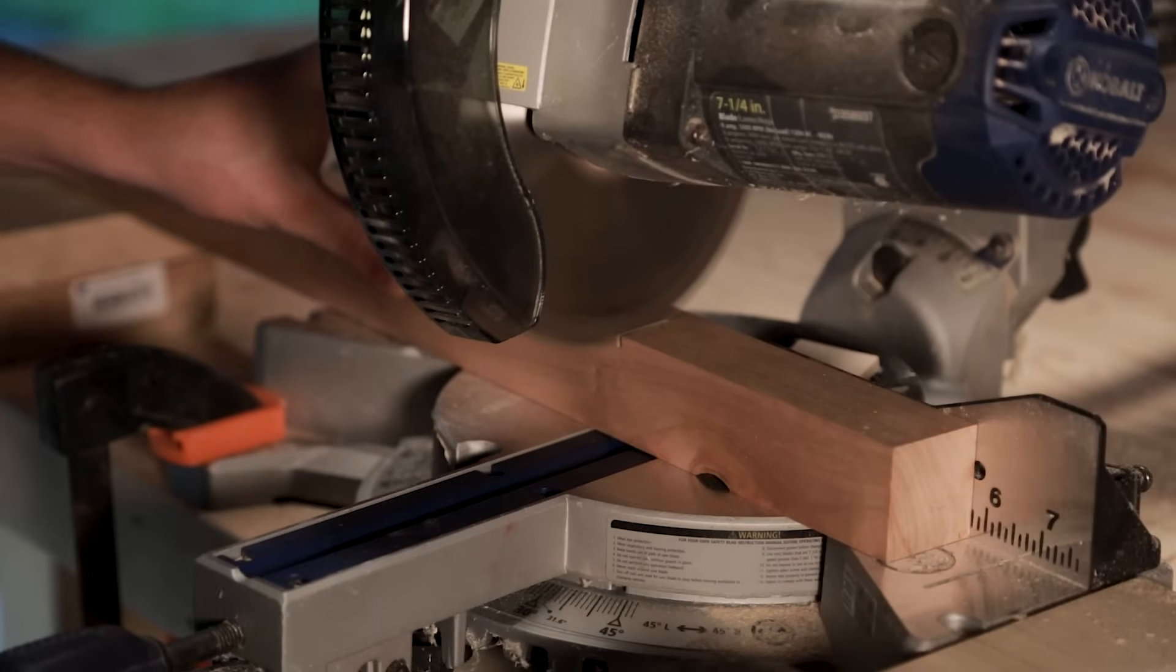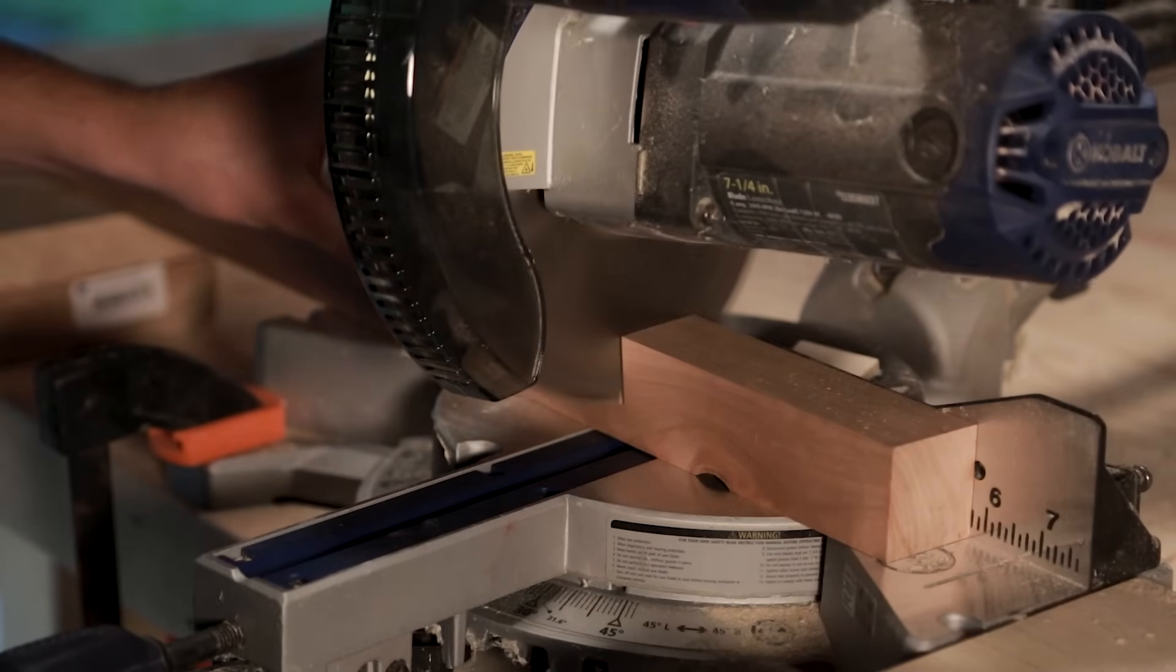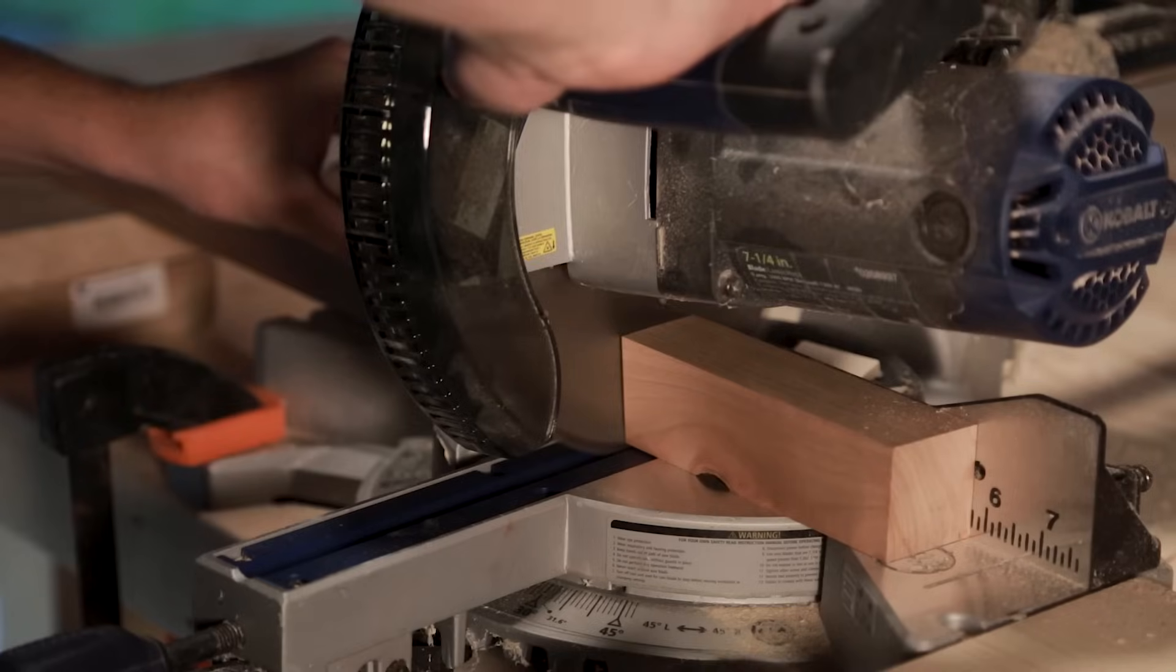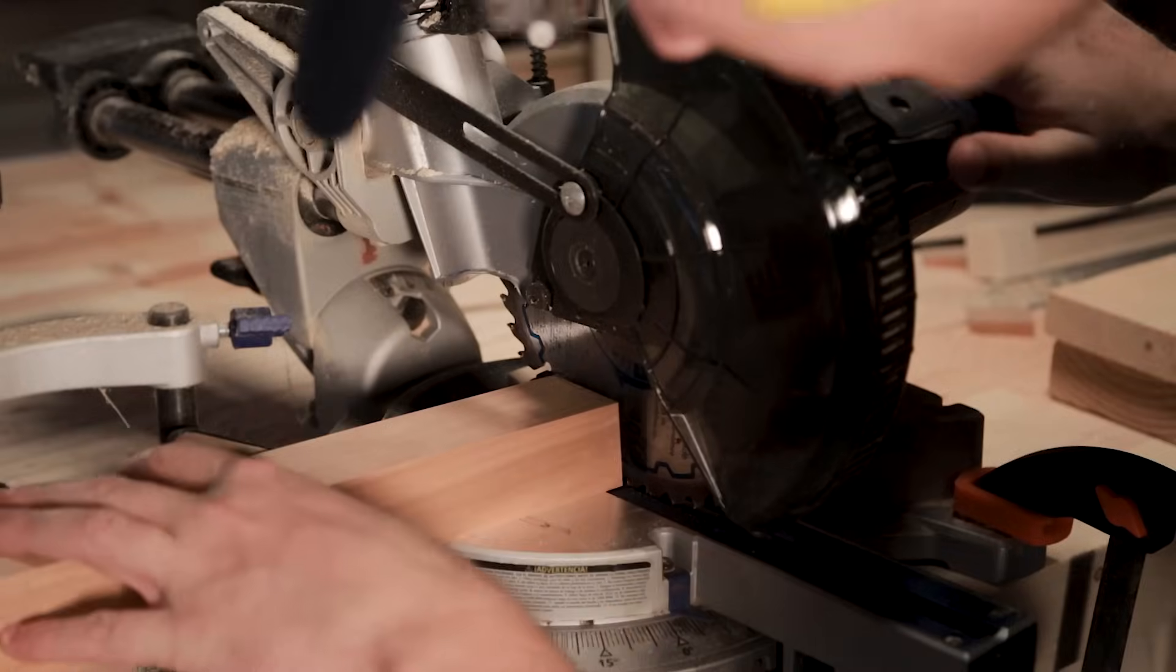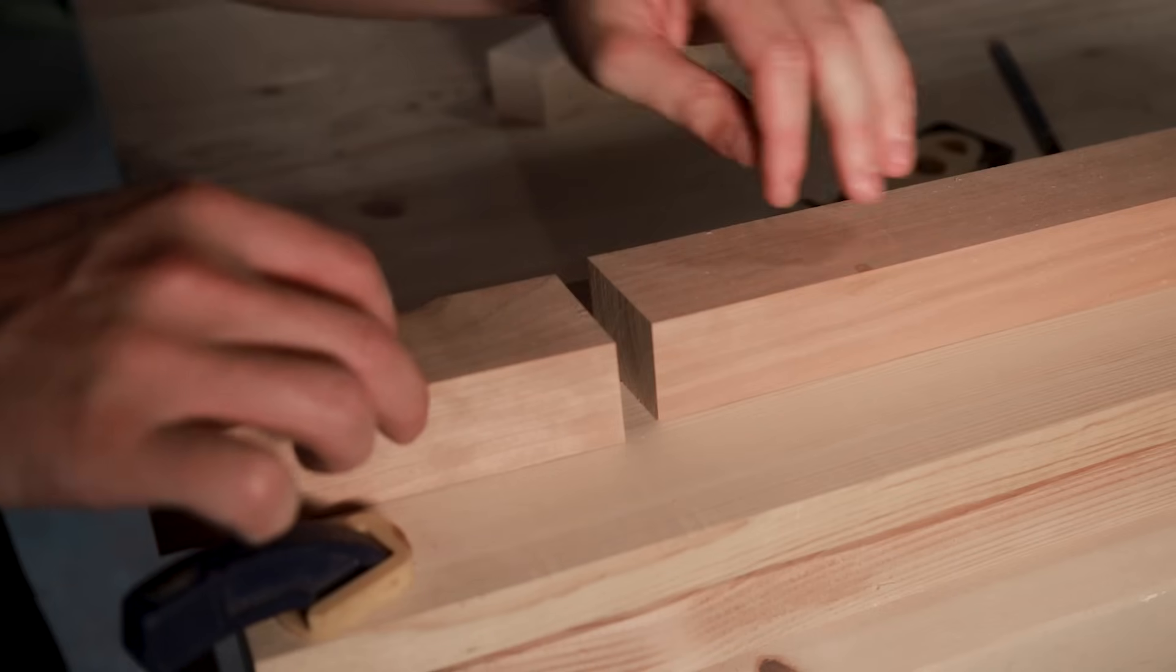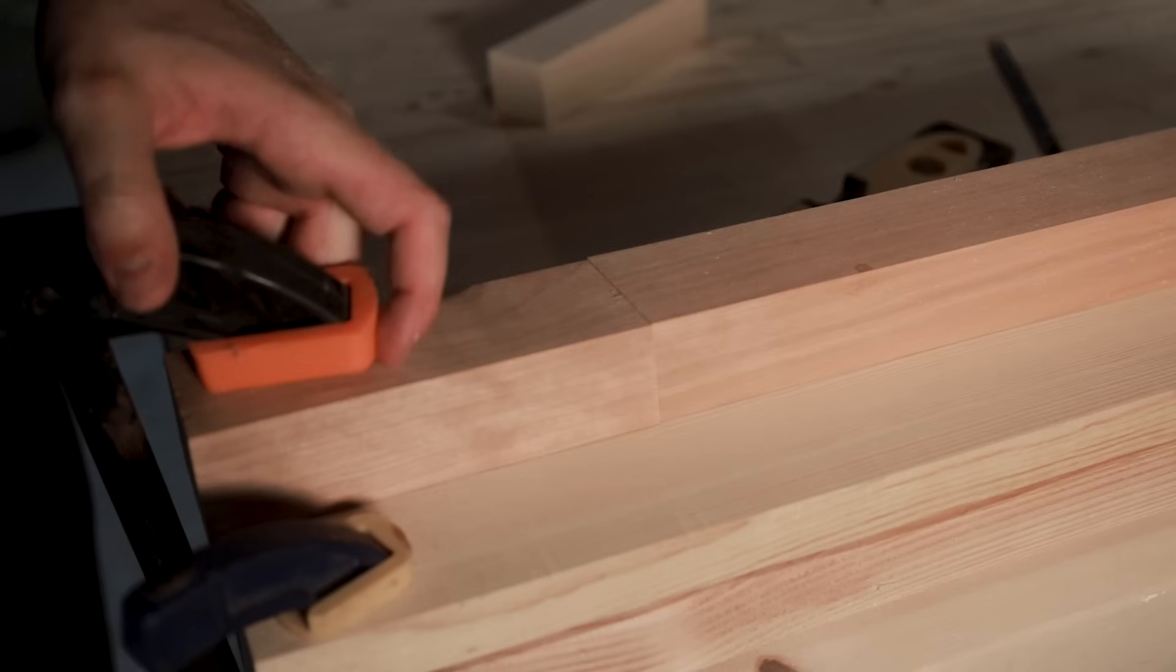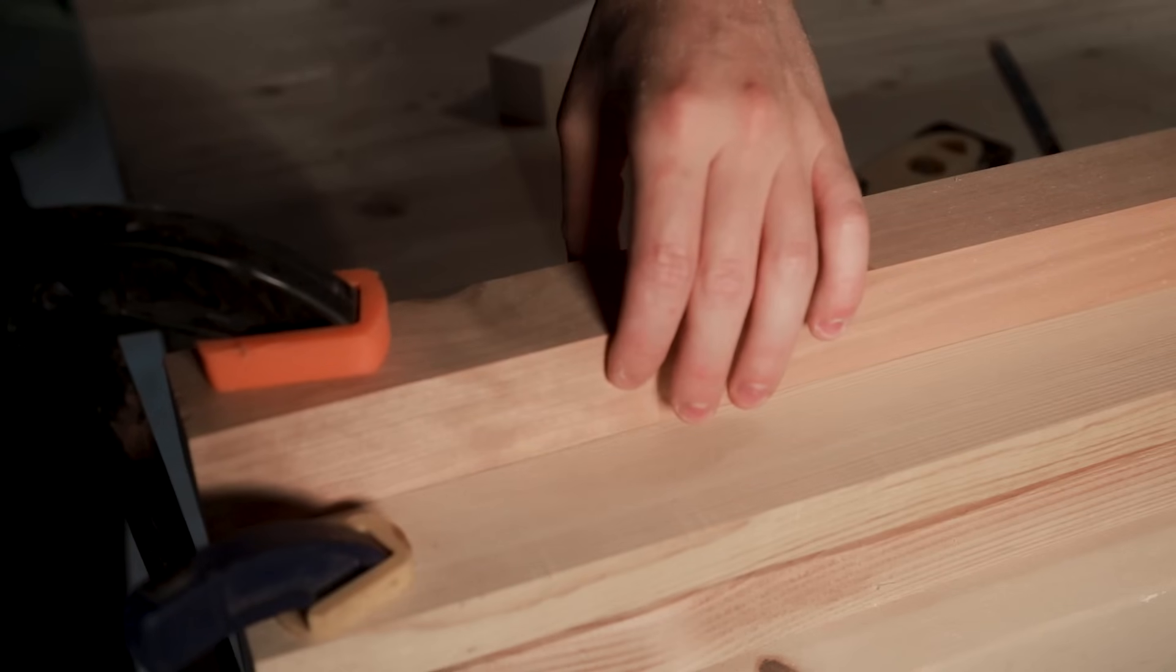When making your final cuts on the legs it is very important that the top and bottom are parallel so that it sits flat to the floor and the seat sits flat to the legs. So take your time and orient the legs properly when making the second cut. To make repeat cuts I just set up a stop block with one of the cut off pieces.